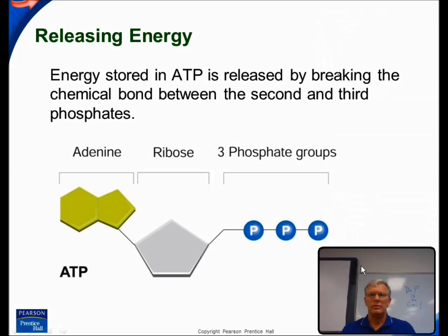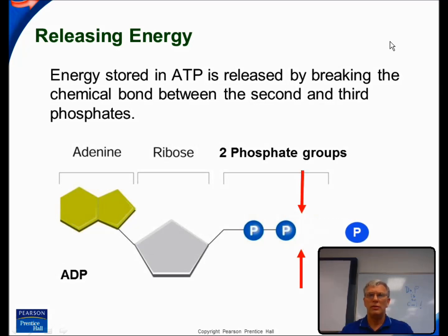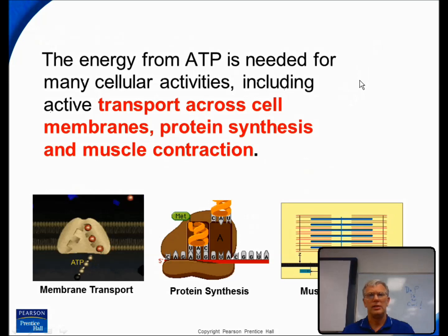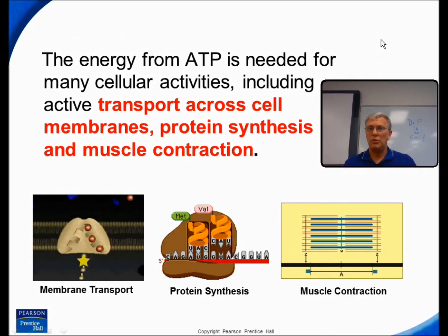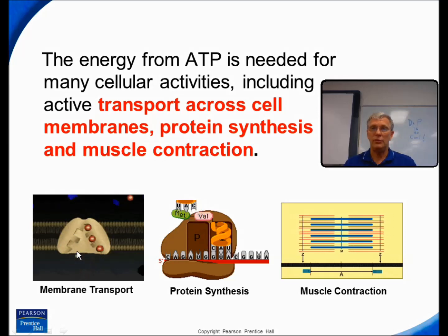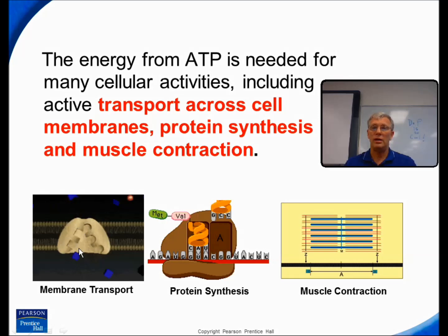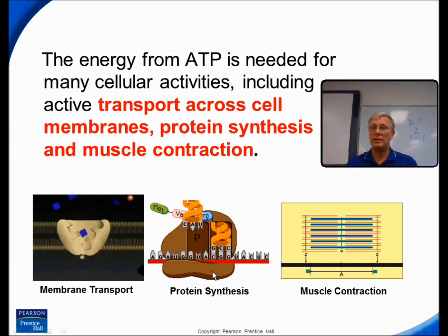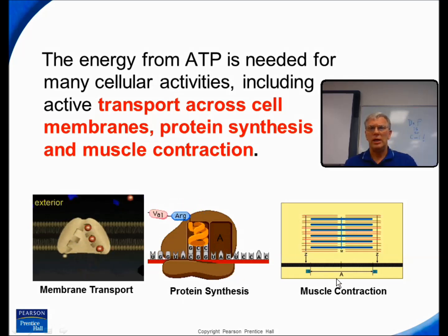As we go through life functions, the energy stored in these bonds can be released when the third phosphate group is broken off. What are some of the things the cell needs to do that require energy? Well, the cell has little pumps in its membrane that require energy to move ions and molecules against the concentration gradient. There are chemical reactions such as protein synthesis that require energy. And muscle contraction also requires a great deal of energy so that we can move and heat up our bodies.